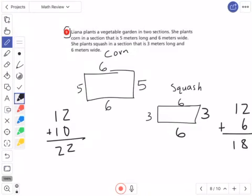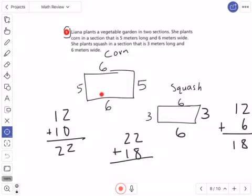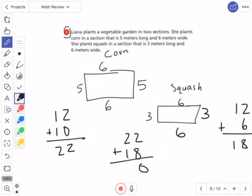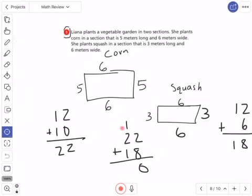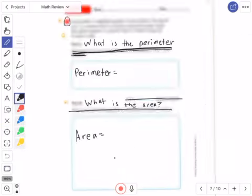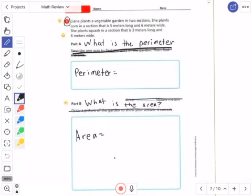Then I just have to add both of these up: 22 plus 18, because I have 22 for corn and 18 for squash. 2 plus 8 is 10, carry my 1 up. 1 plus 2 plus 1 is 4, so my perimeter is 40 meters.